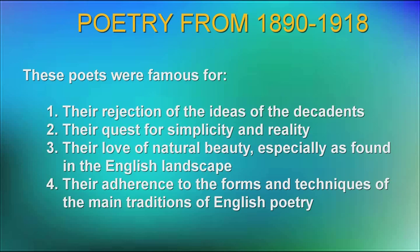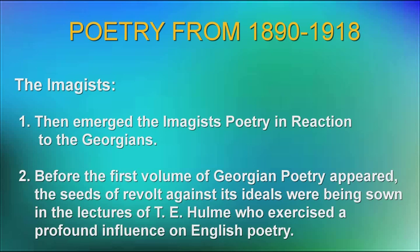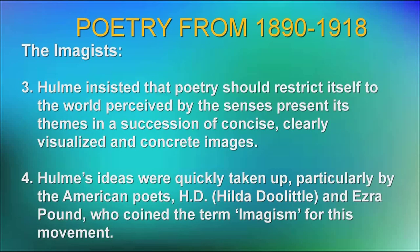Then emerged the Imagist poetry in reaction to the Georgians. Before the first volume of Georgian Poetry appeared, the seeds of revolt against its ideals were being sown in the lectures of T.E. Hulme, who exercised a profound influence on English poetry. Hulme insisted that poetry should restrict itself to the world perceived by the senses, present its themes in a succession of concise, clearly visualized, and concrete images, which are accurate in detail and precise in significance. Hulme's ideas were quickly taken up, particularly by the American poets Hilda Doolittle and Ezra Pound, who coined the term Imagism for this movement.